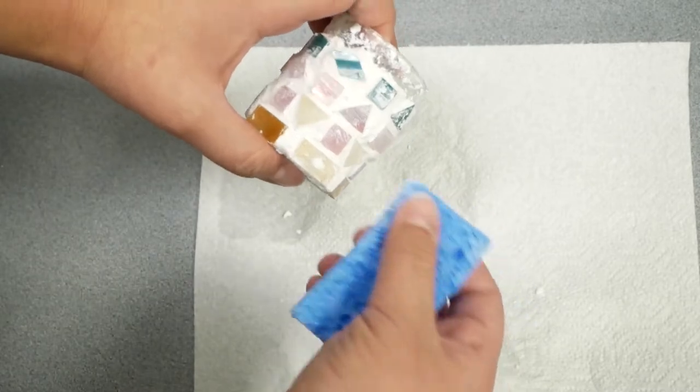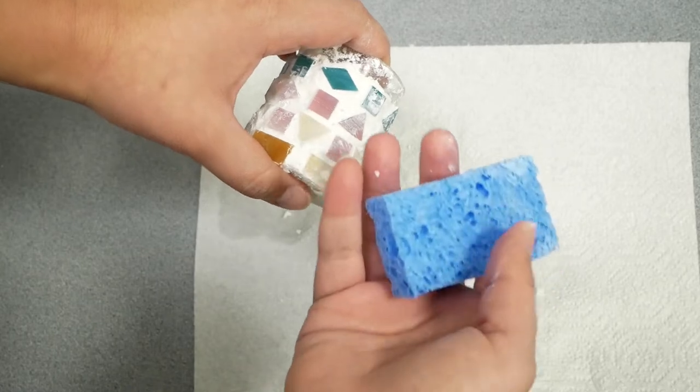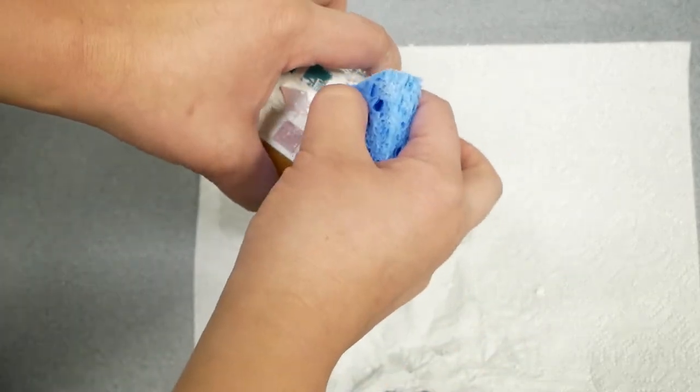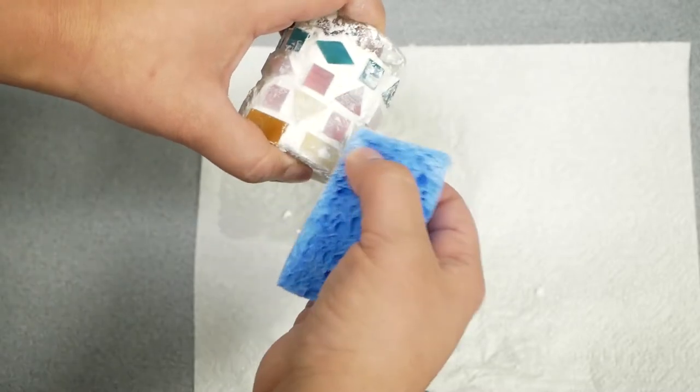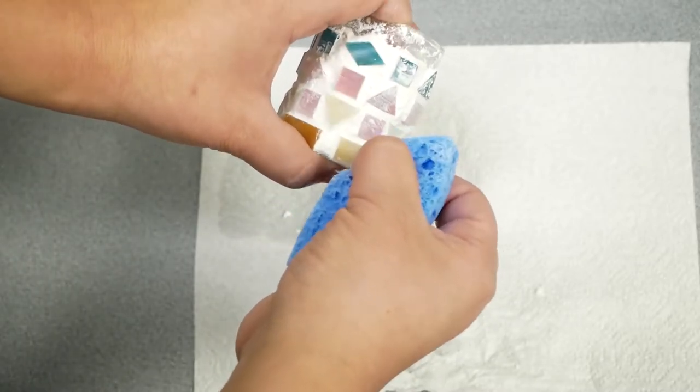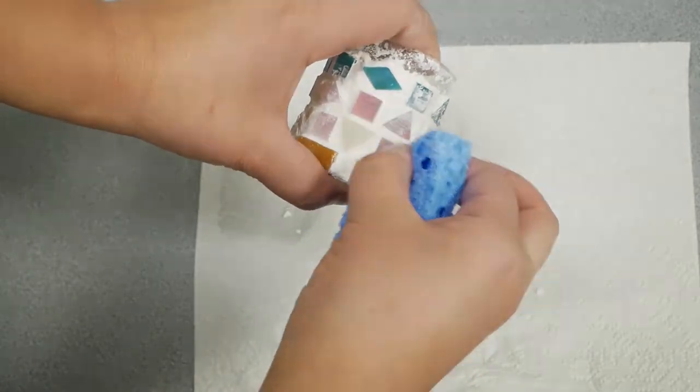So after you do the first pass, you'll still have some grout on these tiles. So you can take your sponge, pretty dry, and just do one more pass to just polish it off. So I'm going to finish up here. And then I'll show you the final result.